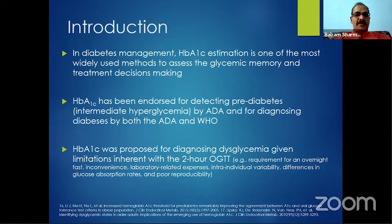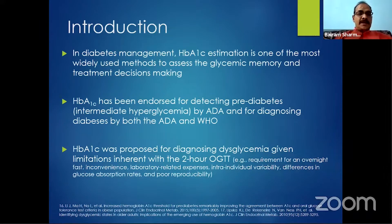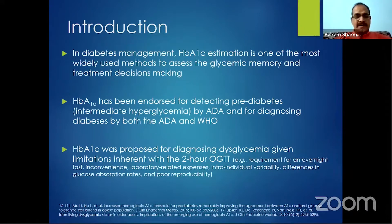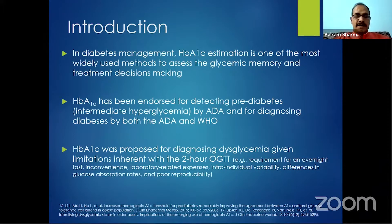HbA1C estimation is now the most widely used method to assess glycemic memory and disease monitoring. Not only by the ADA, but by WHO and other leading organizations, it is endorsed for the diagnosis of diabetes, and by ADA for prediabetes as well, although WHO does not recommend diagnosing prediabetes by HbA1C.